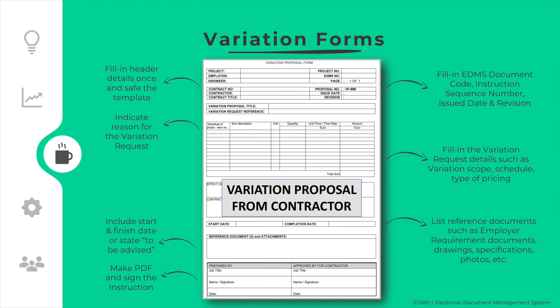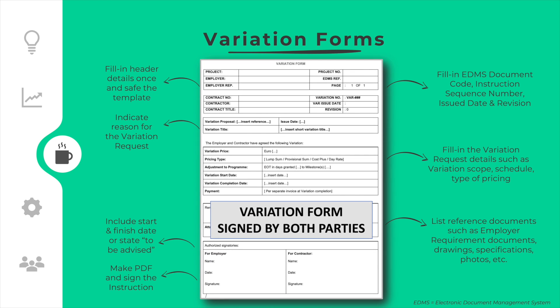When the variation proposal is agreed between the parties, the contractor shall prepare and submit a detailed variation proposal by completing the variation proposal form. Detailed price calculations and quotations from subcontractors and/or suppliers shall be attached, as well as the extension of time details and other relevant documentation. The variation proposal shall be duly signed by the authorized contractor representative. When the variation proposal is agreed or a determination has been made by the employer representative, the employer representative shall prepare and issue a variation form for signature.